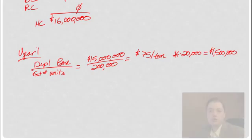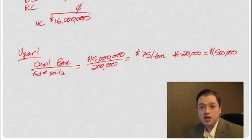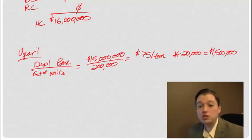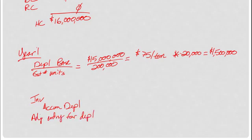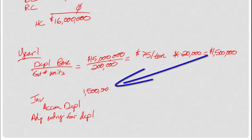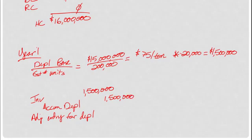Now, what will the journal entry look like? The big question is, what are you going to do with this copper? Well, you're going to sell it, right? If you are creating something that you're going to sell, then it goes into inventory, not into an expense. And typically the answer I get first is depletion expense. But because I'm going to sell it, it doesn't go there. For now, it goes into inventory. And then later on, as I sell it off, then it becomes part of my cost of goods sold.